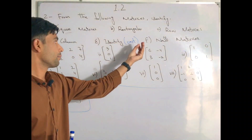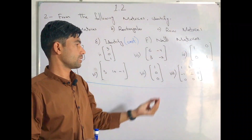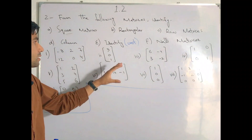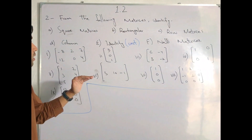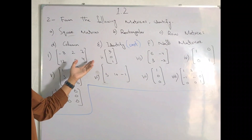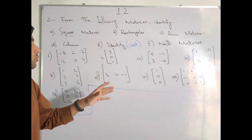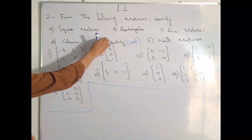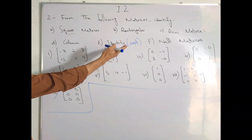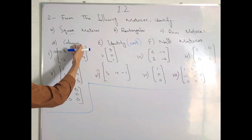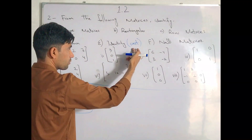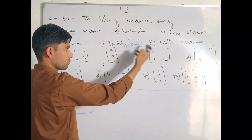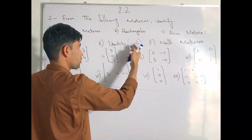Let's look at the different types of matrices: square matrix, rectangular, row matrices, column, and identity. The identity matrix is also called the unit matrix.